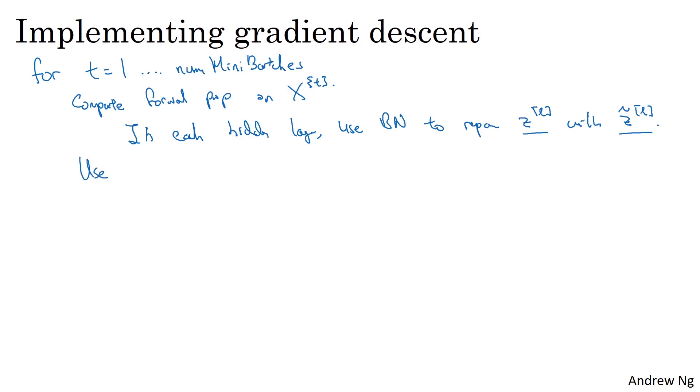And then you use backprop to compute dw, db for all the values of l, d beta, d gamma. Although technically since we've gotten rid of b, this actually now goes away. And then finally, you'd update the parameters. So w gets updated as w minus the learning rate times this as usual. Beta gets updated as beta minus the learning rate times d beta and similarly for gamma.